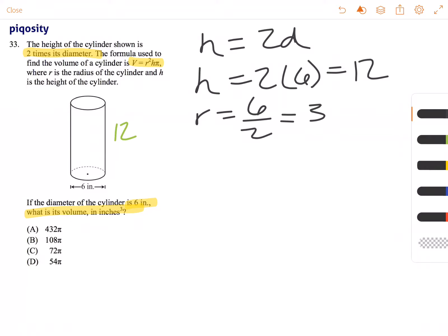We just need to plug in these values into the formula V equals r squared times h times pi. If you look at the answer choices, you'll see all of them have pi in it, so we're not actually going to multiply by pi. We just need to multiply the other values.